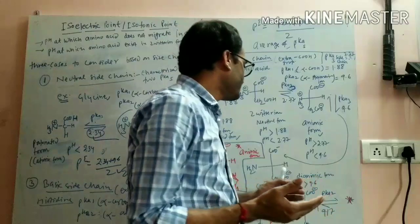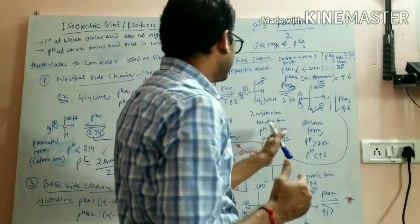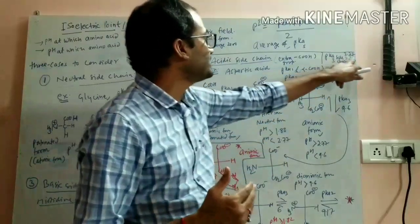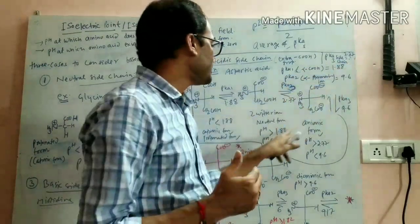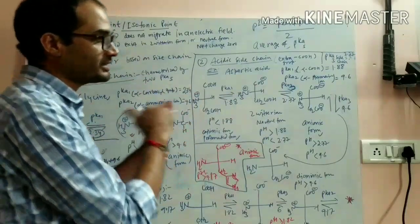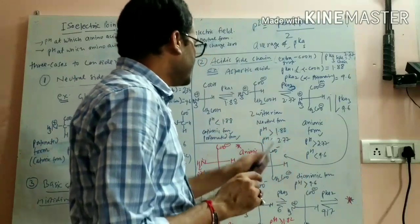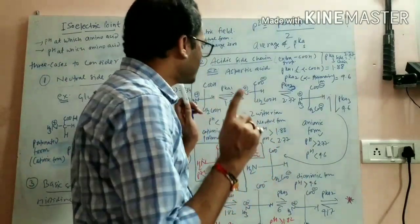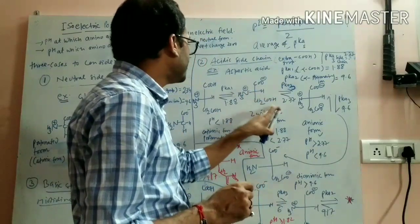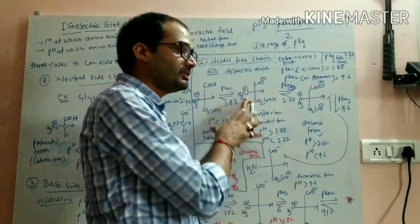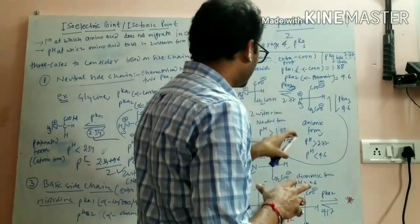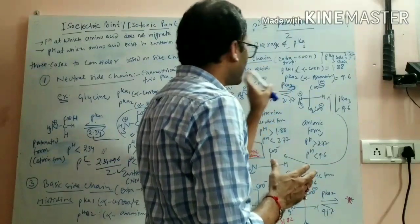When the pH is greater than 1.88 but less than 2.77, the alpha-carboxyl group (pKa 1.88) ionizes to COO−, while the side-chain COOH group and NH3+ remain protonated. This gives one positive charge and one negative charge — total electrical neutrality — so this is the zwitterionic form. This ion will not migrate in any electric field.